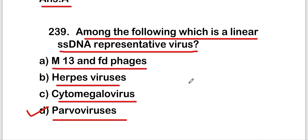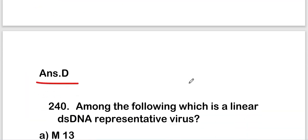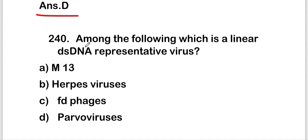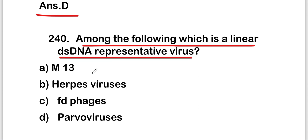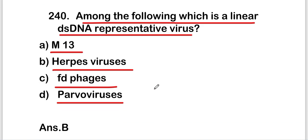The last question of this video: among the following, which is a linear double-stranded DNA representative virus? Options are M13, herpesvirus, FD phages, or parvovirus. The right answer is option B — herpesvirus is a linear double-stranded DNA representative virus. These are all 20 questions of this video. Thank you for watching.